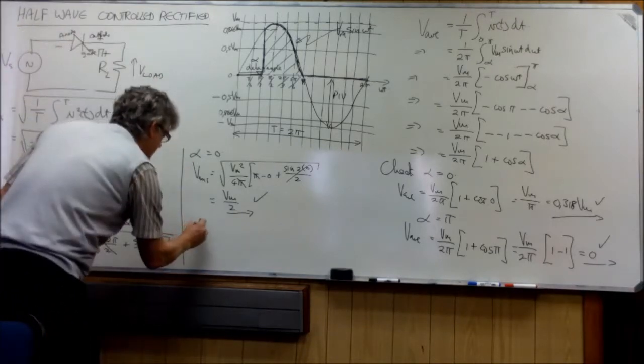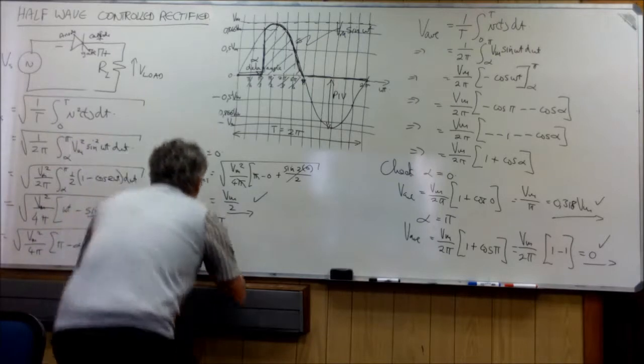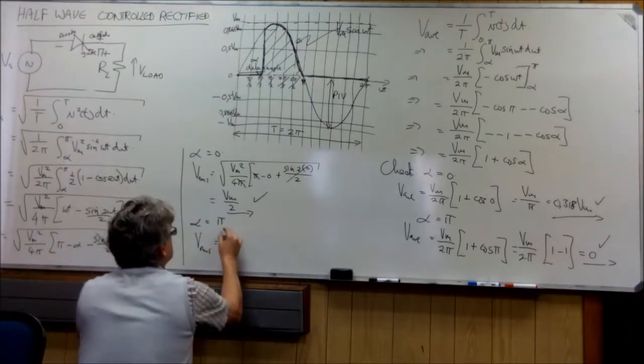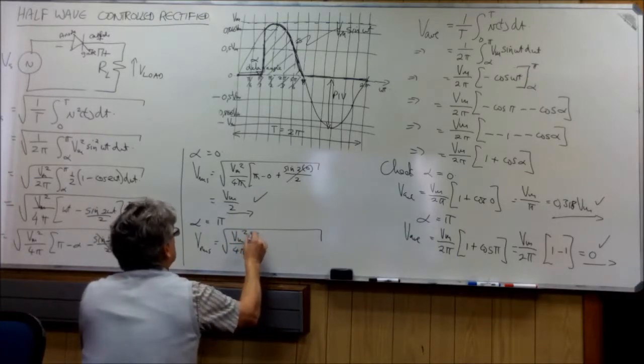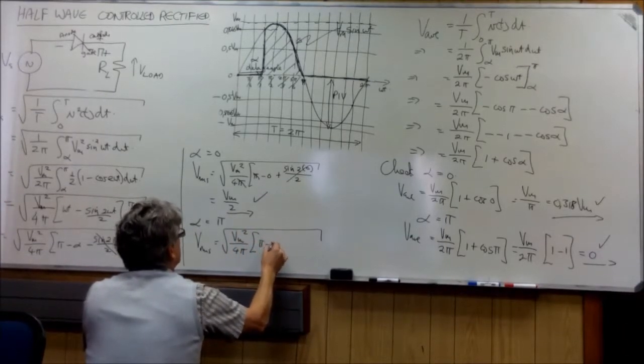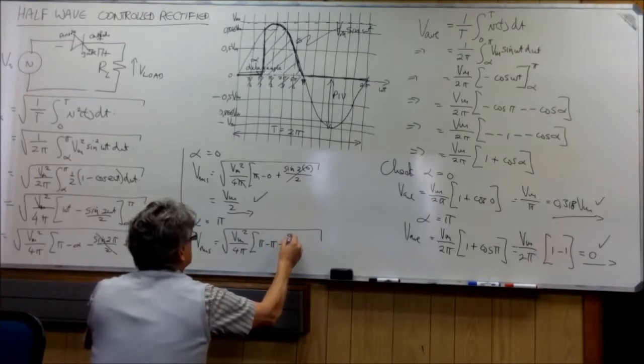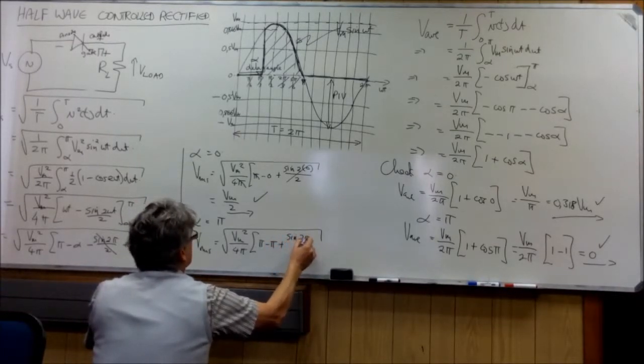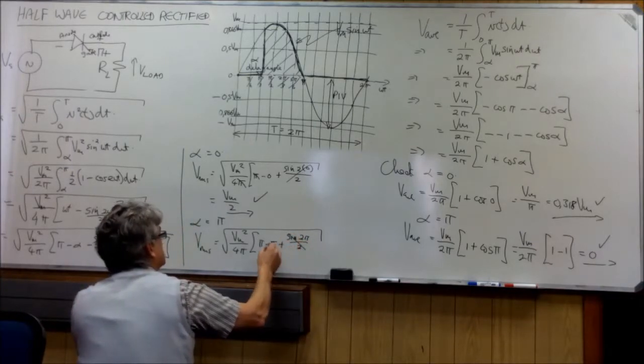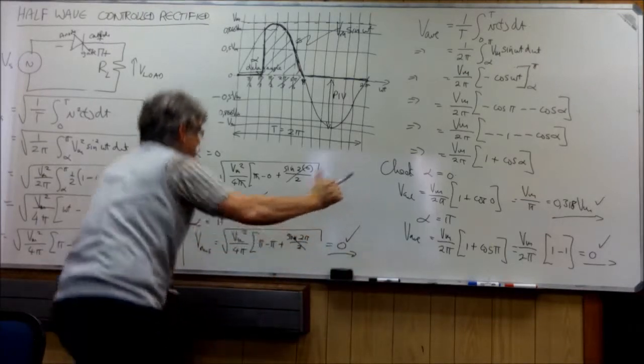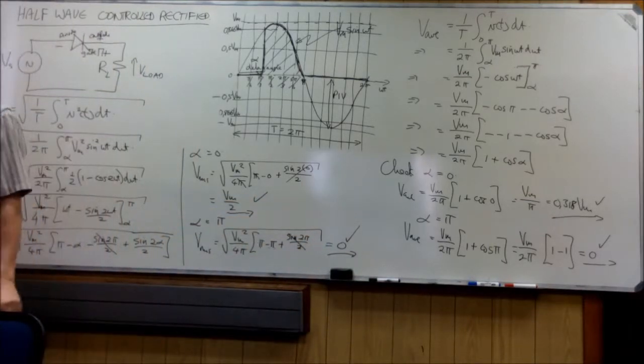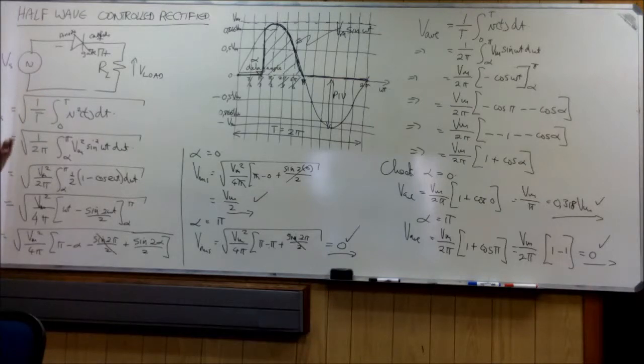And now the other one is alpha is equal to pi. So we say, okay, then v rms is equal to the square root of v max squared over four pi times pi minus pi plus the sin of two pi over two. That is zero. That is zero. Pi minus pi is zero. So the answer is zero. So we say, well, the extreme conditions are the answer satisfied. So we can accept our formula.